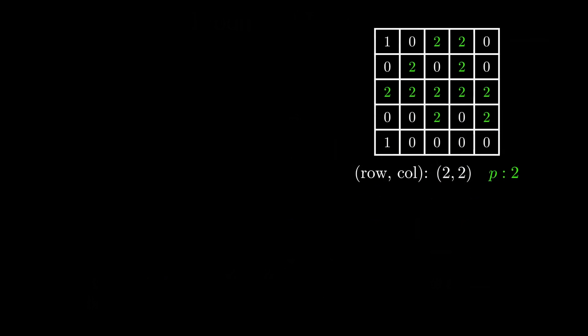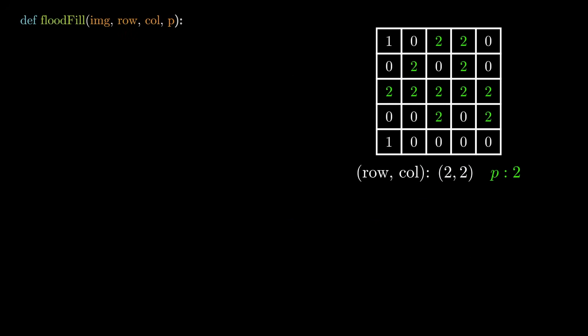Here's how we implement this solution. Our function takes an image, row, column, and a new pixel value. We first need to identify the starting pixel value since this will have a major impact on what pixels are connected to that pixel.